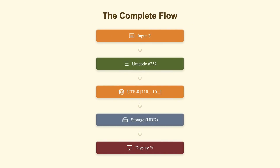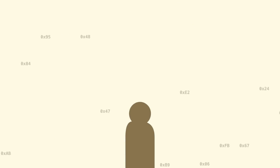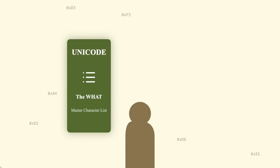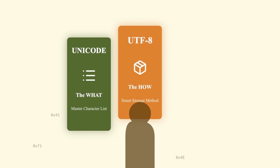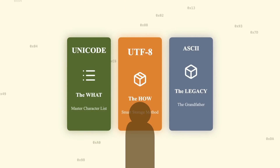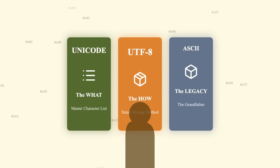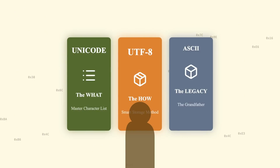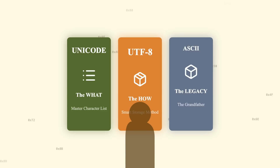So now you know the secret. Unicode is the 'what' — the master character list. UTF-8 is the 'how' — the smart storage method. ASCII is the grandfather, still living inside UTF-8. Next time someone says UTF-8 is 8-bit Unicode, or wonders why their emoji broke the database, you'll know exactly what went wrong. Understanding encoding isn't optional anymore — it's the invisible foundation of every text interaction in our digital world.